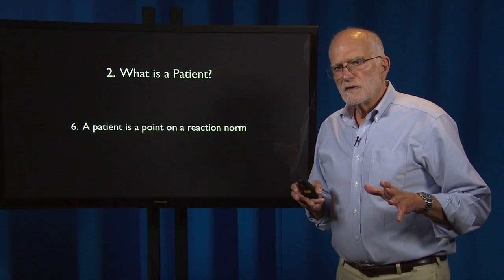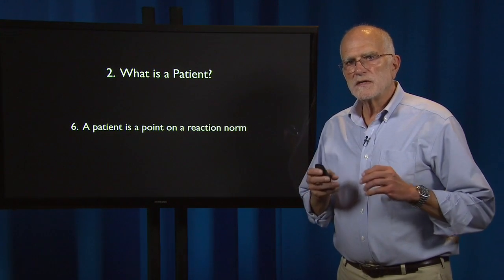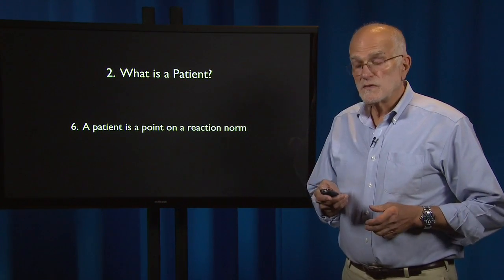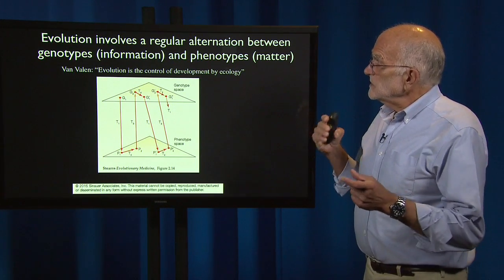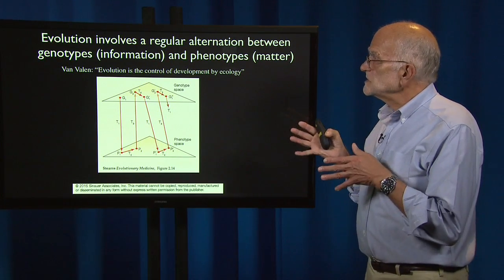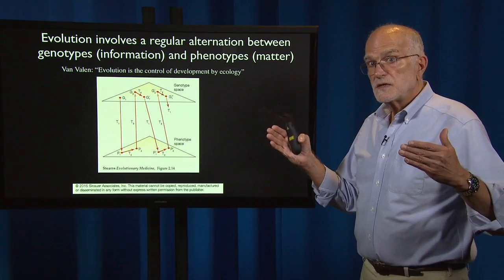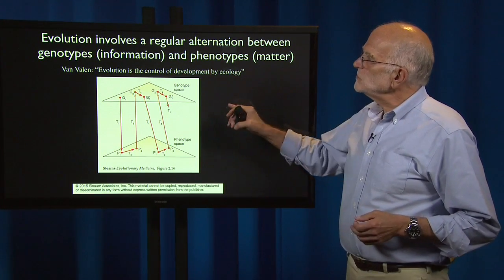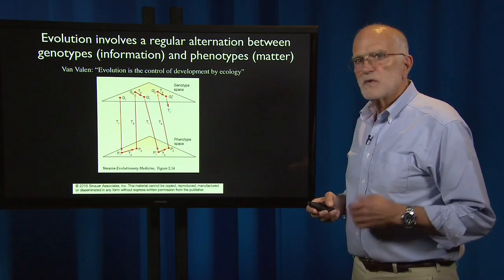I would now like to expand on this idea that a patient is a point on a reaction norm by taking apart the concept of reaction norms and showing you a bit of what difference they make to our analysis. To begin with, a motto from Lee Van Valen is that evolution is the control of development by ecology, and as I step through this you'll see what Van Valen meant.